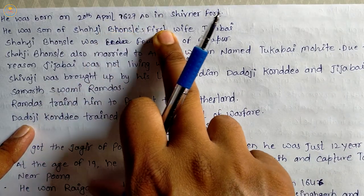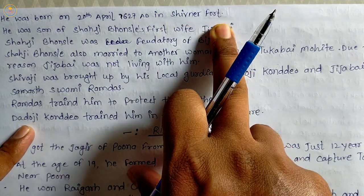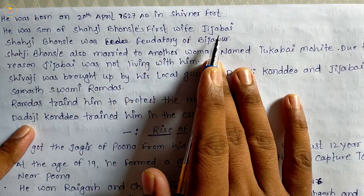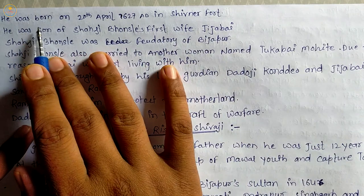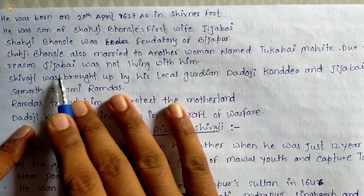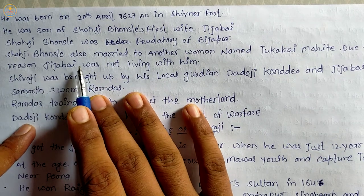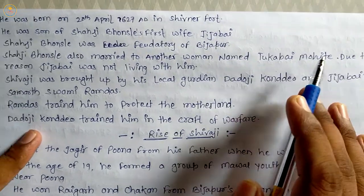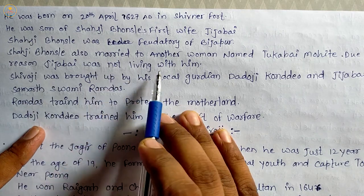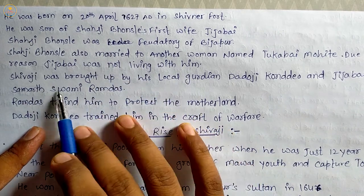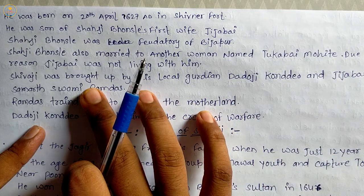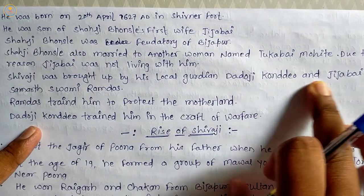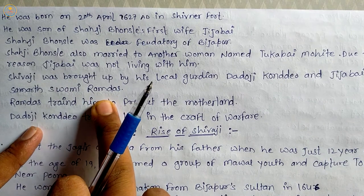Shivaji was born on 20 April 1627 in Shivneri Fort. He was the son of Shaji Bhosle and his first wife Jijabai. Shaji Bhosle also married another woman named Tukkabai Mohite. Due to this reason, Jijabai was not living with him. Shivaji was brought up by his local guardian Dadoji Kondadev and his guru Samarth Swami Ramdas.